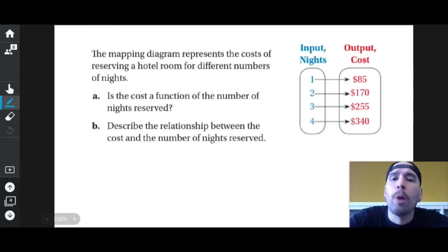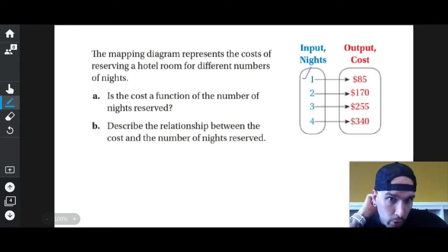The mapping diagram represents the cost of reserving a hotel room for different numbers of nights. Is the cost a function of the number of nights reserved? Well let's see. One is used once, two is used once, three is used once, four is used once. Yes, it's a function.